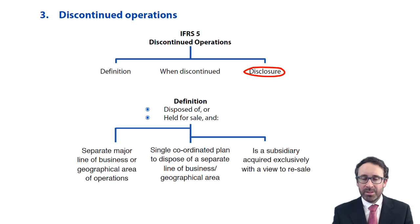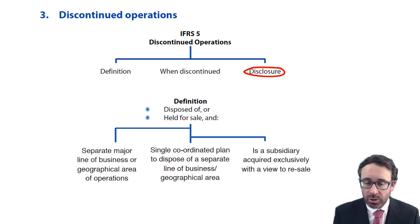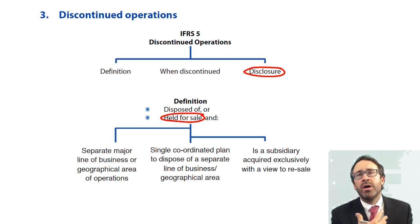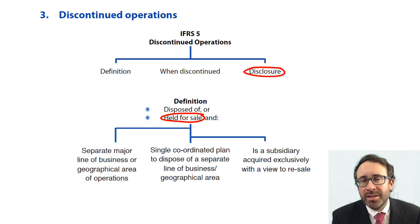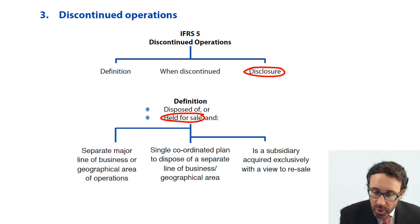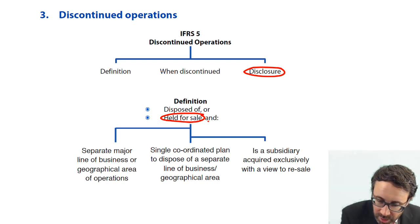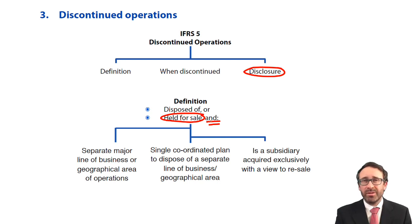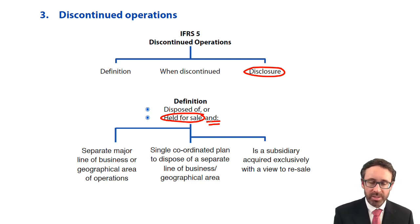So that can't happen until it's been sold. But what the standard does is it brings in the criteria of being held for sale. So you're committed to that plan, and it's highly probable that this sale is going to take place effectively within the next 12 months. But you also need to meet some additional criteria on top of the held-for-sale, i.e. the highly probable criteria.